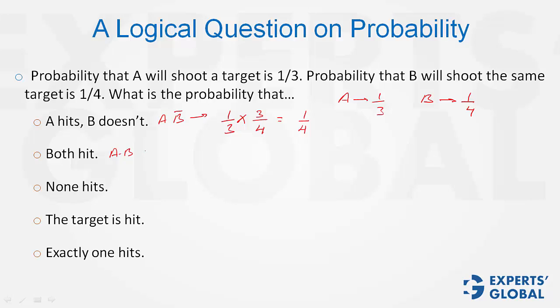Both hit is A into B, so this probability is 1 by 3 into 1 by 4. Quite simply, 1 by 12.